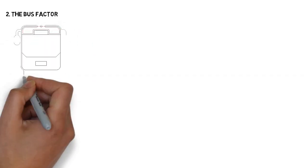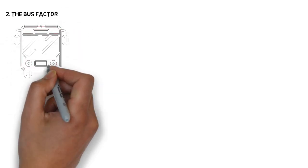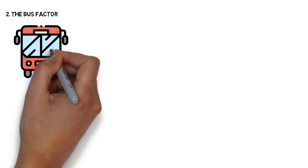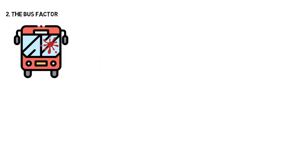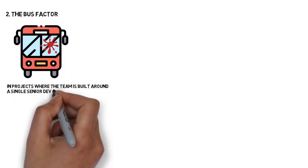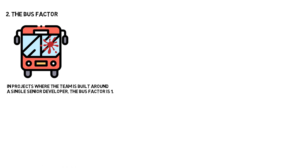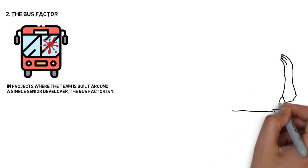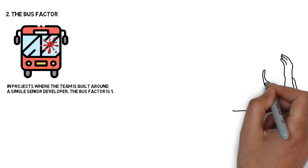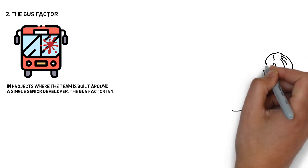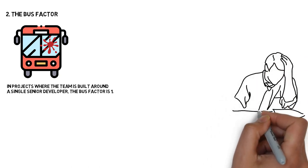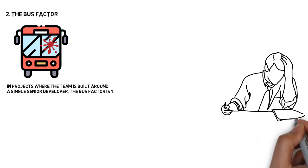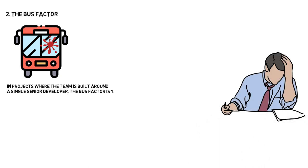A bus factor is a half-serious notion of how many developers have to be hit by a bus before a significant part of the project will be left without anybody having a good idea what's happening in it. In projects where the team is built around a single senior developer, the bus factor is one. In reality, people rarely get hit by a bus. They just leave the company because someone else made them a better offer because of a personal conflict or because they are no longer happy with what they're doing. Projects built around single senior developers and companies embracing the hero culture are sensitive to all these three factors.